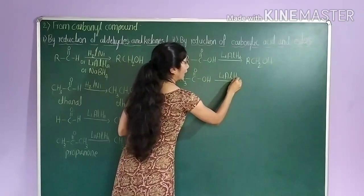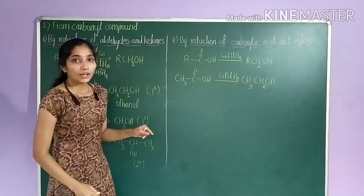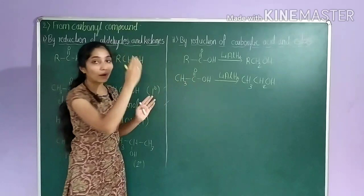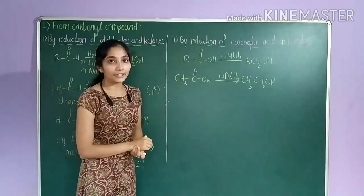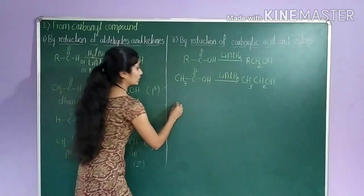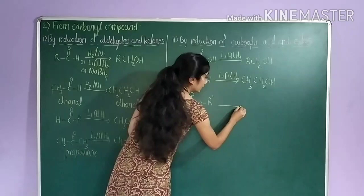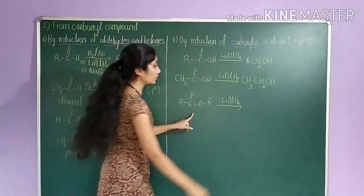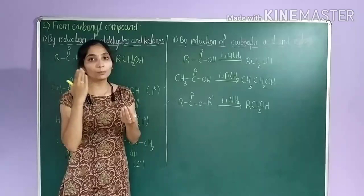Let us take acetic acid as an example: CH3–C(=O)–OH. If you treat acetic acid with lithium aluminium hydride, the product is CH3CH2OH, ethanol. The mechanism here is different because the carboxylic acid contains an OH group whereas aldehydes and ketones contain only H or alkyl groups. For esters, R–C(=O)–OR', treating with LiAlH4 also gives the corresponding alcohol RCH2OH. You can take methyl or ethyl groups as examples and write those reactions yourself.